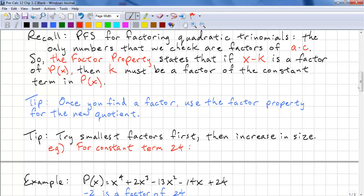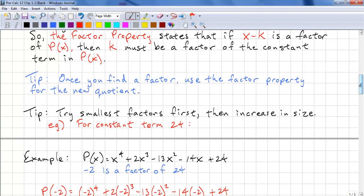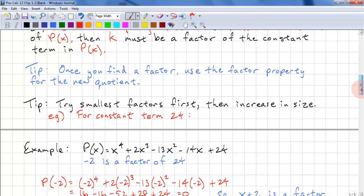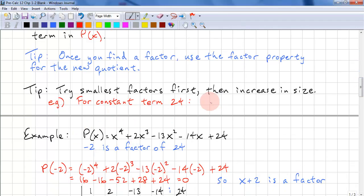This will make more sense once we look at an example. Another tip is try the smallest factors first, because the numbers that you evaluate will be smaller. For the constant term 24, we would try plus or minus 1, plus or minus 2, plus or minus 3, plus or minus 4, plus or minus 6, plus or minus 8, and so on.